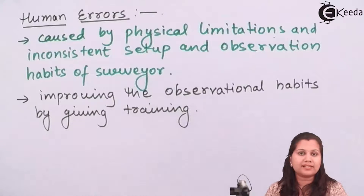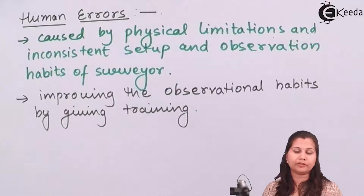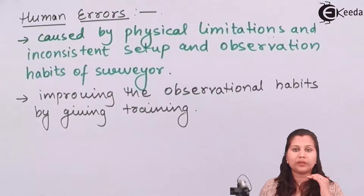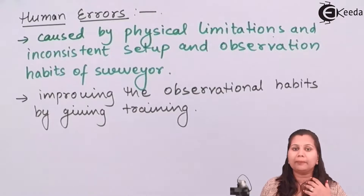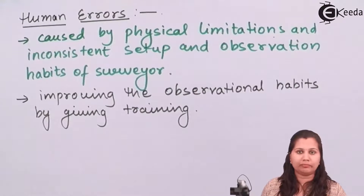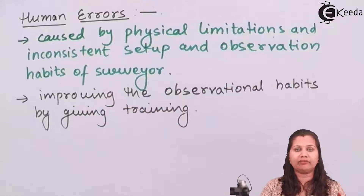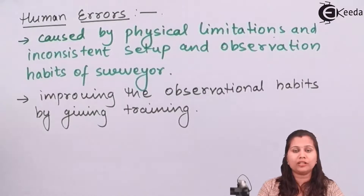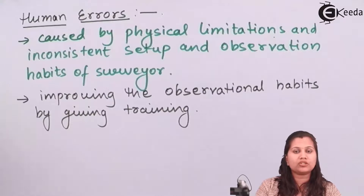Human errors can be reduced by training the observer to improve their observational habits. If the observer is trained in how to work with the instrument and how to take readings, they can perfectly record measurement results. Also, if the observer is tired, we can change the shift and bring another observer to take the readings.